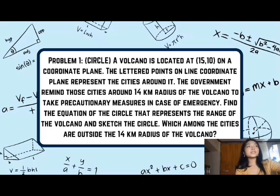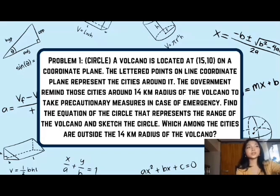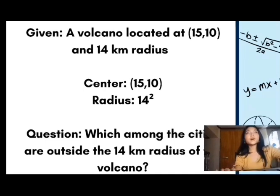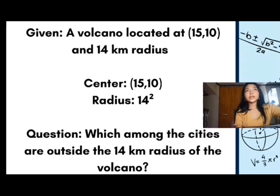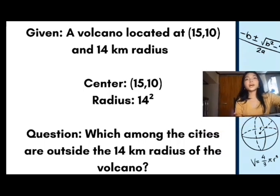A volcano is located at (15, 10) on a coordinate plane. The lettered points on the coordinate plane represent the cities surrounding it. The government reminds those cities within a 14 km radius of the volcano to take precautionary measures in case of emergency. The givens are: the volcano is located at (15, 10), which will be our center, and its radius is 14 km.